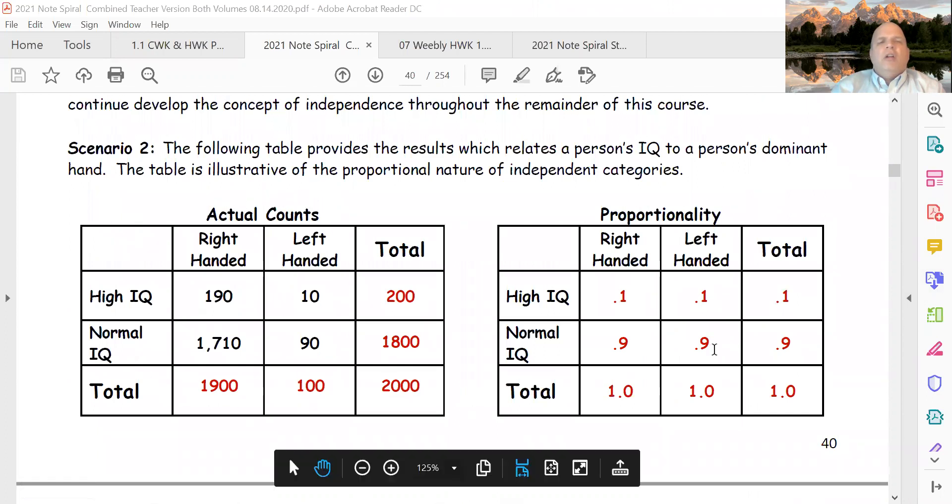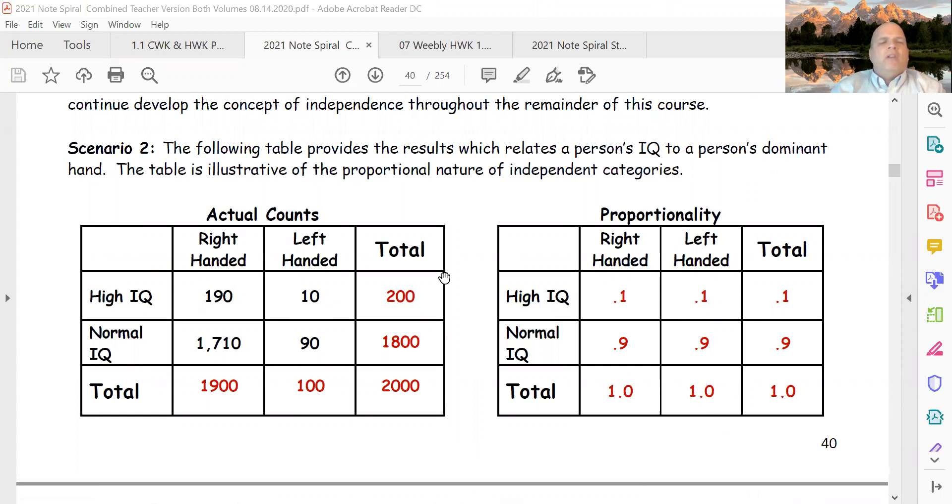What I wanted to say about this is if things are independent, if variables are independent—in this case we had variables of IQ and variable of dominant hand—and if they're independent they'll be proportional. Basically when I turn these observed values into proportions, I see that high IQ is 10% across regardless whether you're right-handed or left-handed.